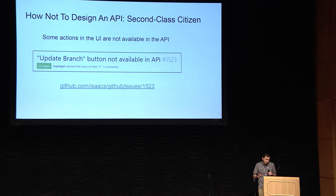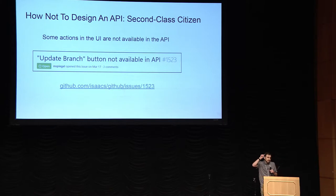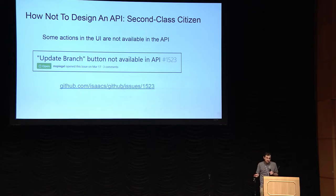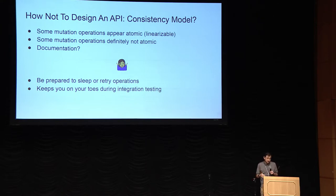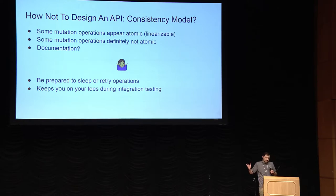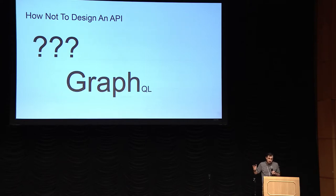Please dog-food your APIs. For example, the 'Update Branch' button in the UI is not available on the API, and I work around it, but it's a pain. Please make everything available. Some actions don't occur immediately and the documentation doesn't tell you — especially things like repository creation and pull request creation. It's loads of fun when you're doing integration testing and you realize you have to add random sleep or retry logic.